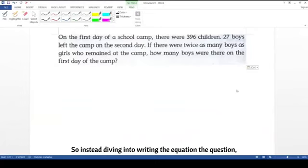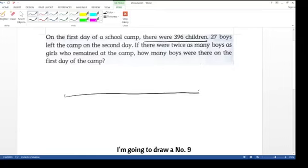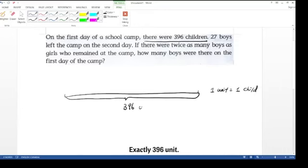Instead of diving into the right equation of the question, I used my tools, the number line, to help me understand the question. Let's start. First sentence, there are 396 children. So I'm going to draw a number line. One unit on the number line is equal to one child. So how many units are we going to have on this number line? Exactly 396 units.